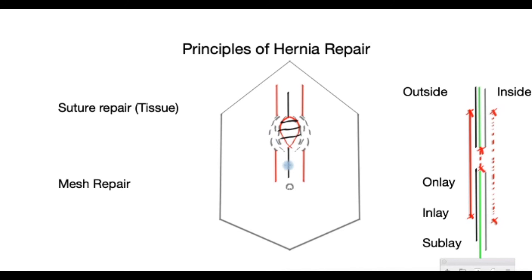In a suture repair, stitches are inserted and the two edges are pulled together. This works quite well in some places but not in others, because inevitably there is some tension when sutures are placed, and this recreates the condition that caused the hernia in the first place.